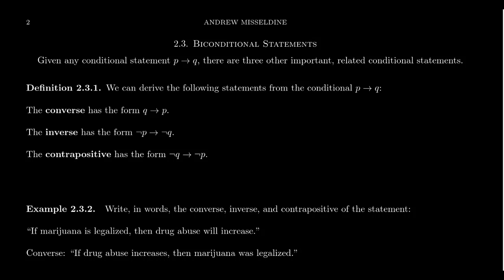In order to define what a biconditional statement is, I first have to talk about the fact that given any conditional statement, there are actually three other related important conditional statements from which we'll construct a biconditional. So given the conditional P implies Q, which is our starting conditional, three related conditional statements exist. There is the so-called converse of the conditional statement, which is Q implies P.